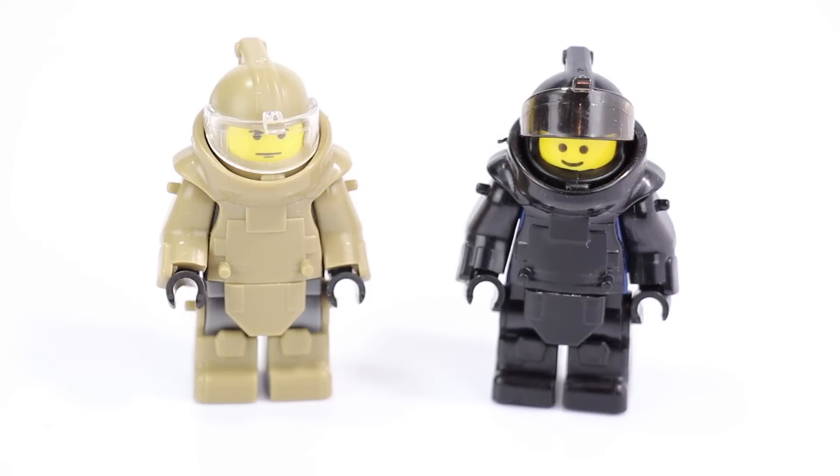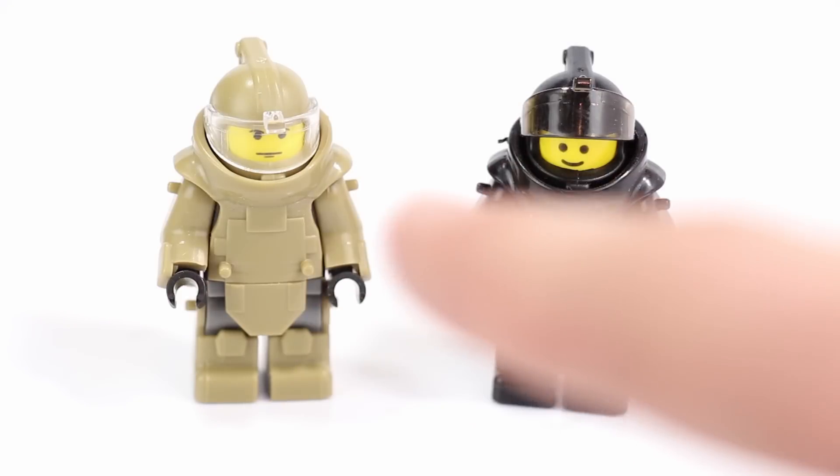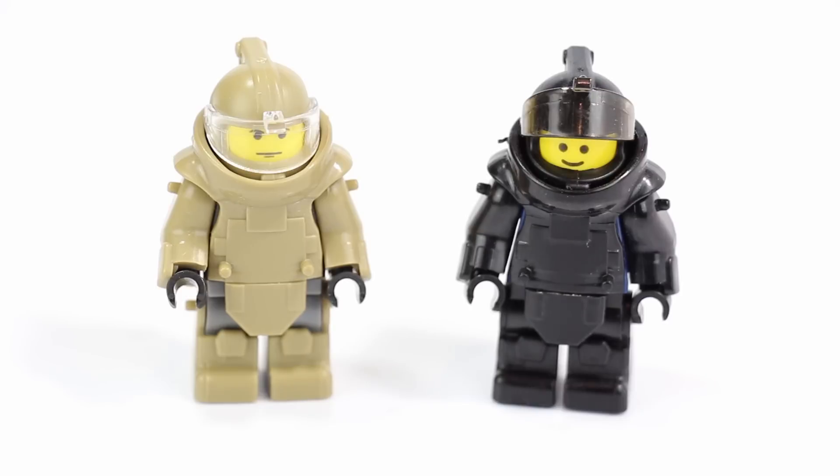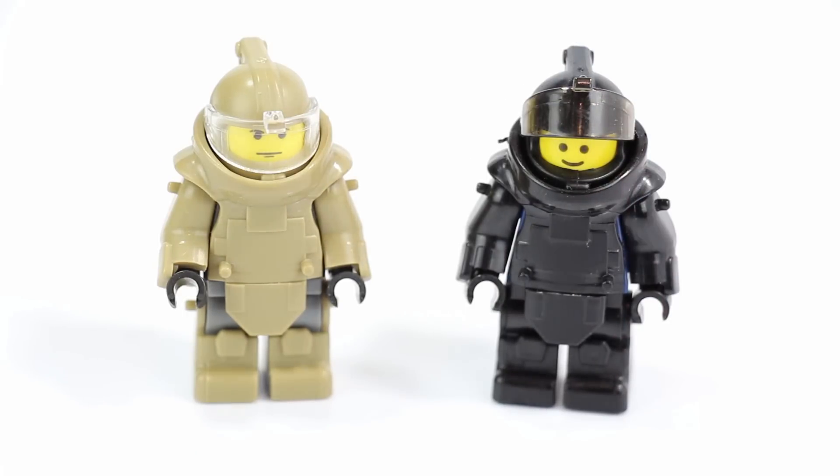So this is an EOD bot minifigure. I sell these figures, I'll put links to both of them in the description below. We have the black variant and then the dark tan variant. The ones I sell on my website are a little bit different. They actually have printed armor, so it actually has little chest plates. It says EOD even on the back of the helmets, so these are like the prototypes before I started to sell them. The company that actually makes the armor makes some that are blank like these and then the printed ones.